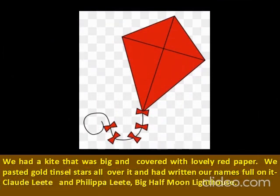They had a kite that was big and covered with lovely red paper, decorated with tin foil stars. Over it, they had written their full names — Claude and Cecily — with their address: Big Half Moon Lighthouse.